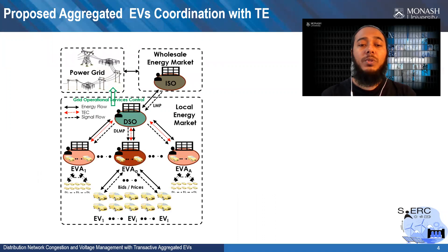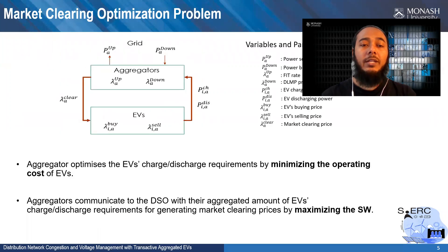In our proposed method, distribution system operators clear the market using an optimization problem and also provide services to the power grid for grid operational service control, where the aggregated electric vehicles are connected. The market clearing optimization problem operates in two levels.